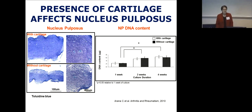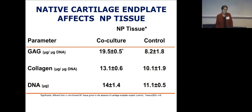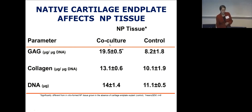We did another experiment to investigate this in more detail. First, we asked if this was just a culture artifact. We co-cultured nucleus pulposus cells on their bone substitute with actual endplate cartilage from an intervertebral disc. Again, the nucleus pulposus tissue in the presence of this cartilage tissue accumulated more matrix, with no significant difference in cellularity, clearly confirming the cartilage was having an effect on tissue formation.